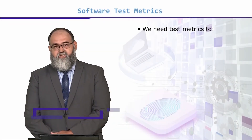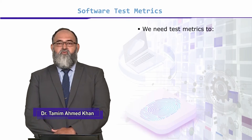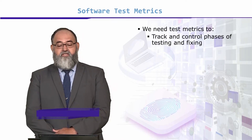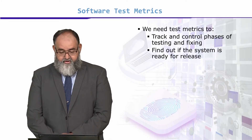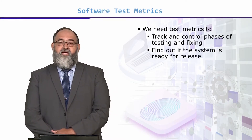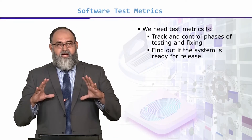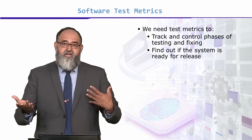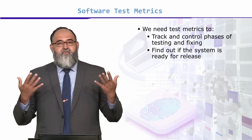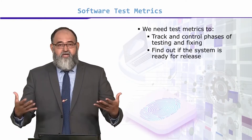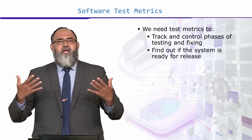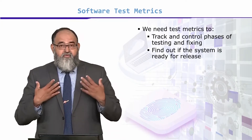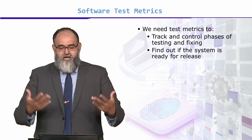Students, we have seen what test metrics are and how they are used. Now we are going to see what is the importance of test metrics. We need metrics to track and control phases of testing and fixing. It is very interesting to see how many were fixed, how many re-opened, how many deferred, how many rejected. This is big golden information — if two test teams and two development teams are compared, we can clearly see which development team is generating code of better value and which testing team is more effective.